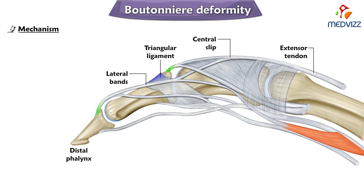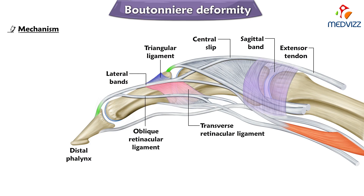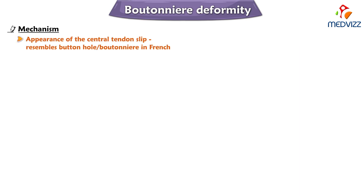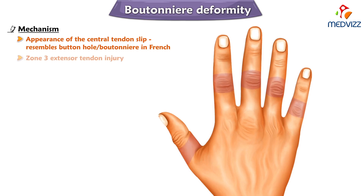Here you can see the sagittal band, transverse retinacular ligament, and also another important ligament called the oblique retinacular ligament. You have to know and remember all these structures, which are very important for understanding the mechanism of boutonniere deformity. The sign derives its name from the appearance of the central tendon slip, which was thought to resemble a buttonhole or boutonnière in French. Boutonniere deformity is a zone 3 extensor tendon injury.